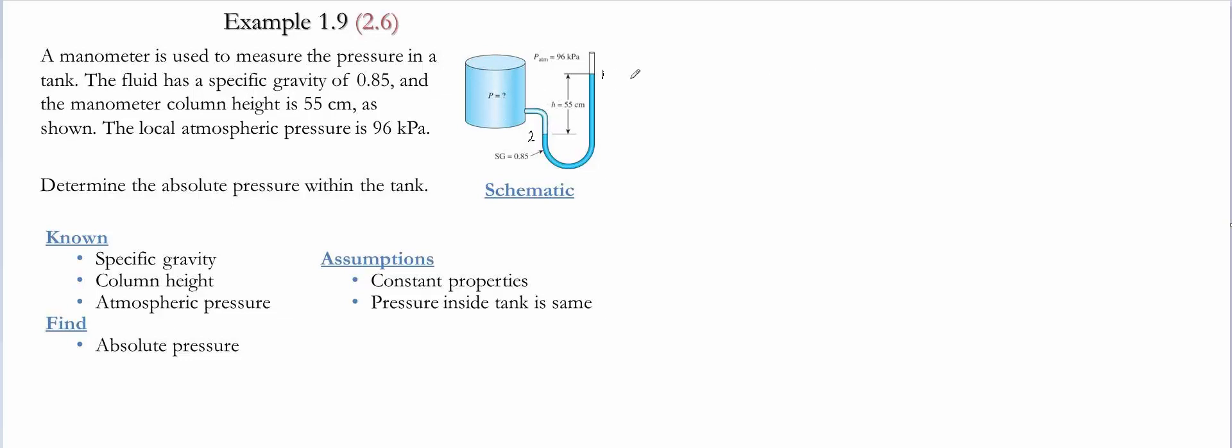Then we write the relationship between these two pressures. We write P2 equals P1 plus density times gravitational acceleration times the height between those two points. P1 is the atmospheric pressure, which is 96 kilopascals.